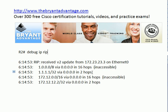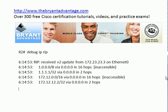Debug IP RIP is going to show you what routes are being advertised, perhaps some that are inaccessible — perhaps by route poisoning. It's going to show you all of that great information. So if you've got any kind of RIP issue at all, debug IP RIP is definitely the first one you want to run.